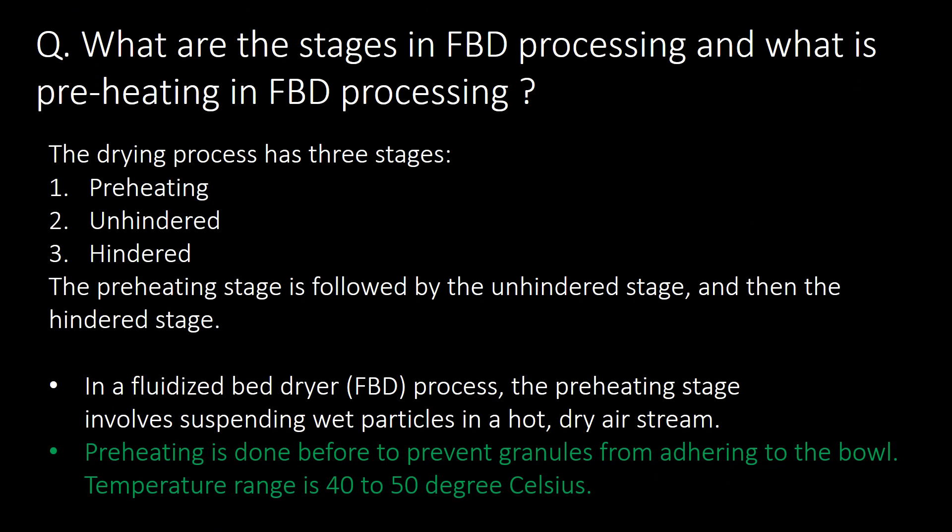What are the stages in FBD processing and what is preheating in FBD processing? The drying process has three stages: first, preheating; second, unhindered; and third, hindered. In FBD processing, the preheating stage involves suspending wet particles in a hot dry air stream. Preheating is done beforehand to prevent granules from adhering to the bowl, and the temperature range is 40 to 50 degrees Celsius.